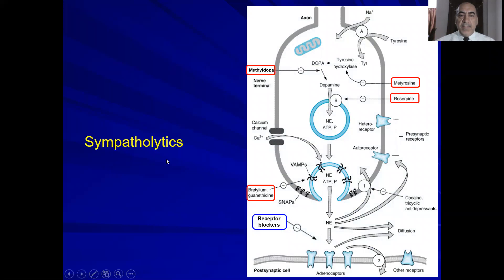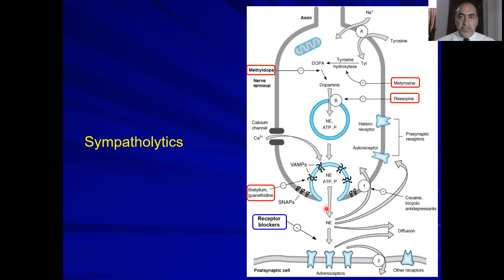Sympatholytics are those drugs that can antagonize the effect of the sympathetic nervous system. There are two classes of these drugs: drugs that inhibit noradrenergic transmission, and adrenergic receptor blockers.